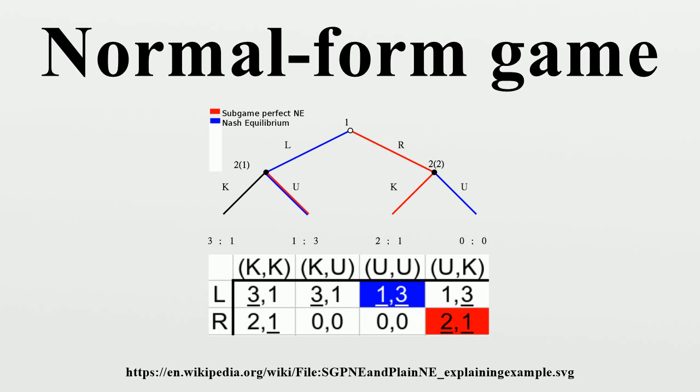Similarly, one compares the second payoff in each row. Again, 0 is greater than -1 and -2 is greater than -5. This shows that no matter what row does, column does better by choosing defect. This demonstrates the unique Nash equilibrium of this game.